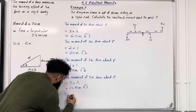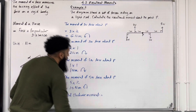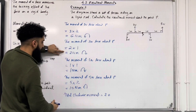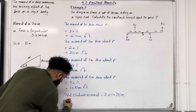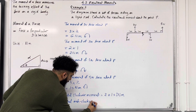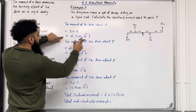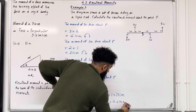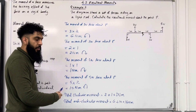Now we need to calculate the total clockwise and total anti-clockwise moments. The total clockwise moment equals 2 Newton meters plus 1 Newton meter, which is 3 Newton meters. The total anti-clockwise moment equals 6 Newton meters plus 10 Newton meters, which is 16 Newton meters. The greater moment is the anti-clockwise moment at 16 Newton meters.